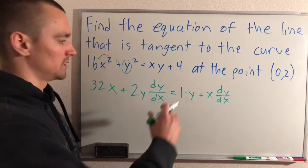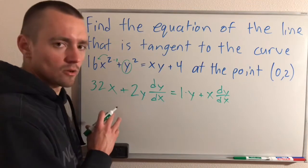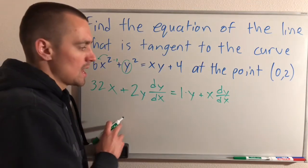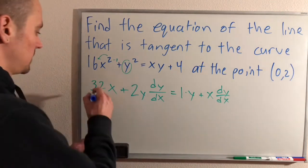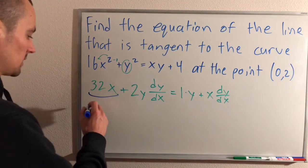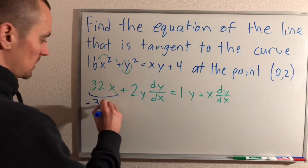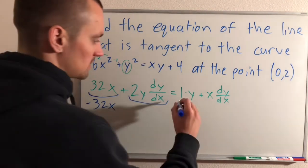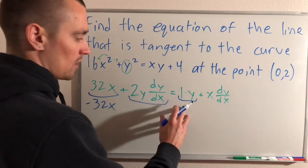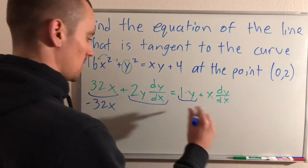Now what we need to do is move all of our dy/dx terms to one side of the equation and all of our non-dy/dx terms to the other side. So this term here doesn't have a dy/dx in it, so we'll subtract it over to the other side. This term here does, so we'll leave it on the left. This term does not have a dy/dx in it, so we'll leave it over here on the right.